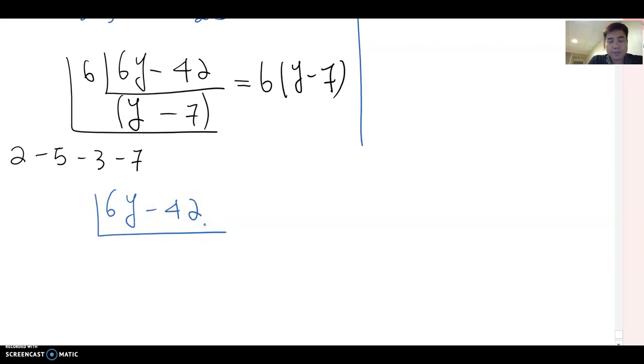So out of 2, 5, 3, 7, I told you we start from 2. Is 2 working for both terms? Yes. Then just do it. So 2 and 3y and 21 here.